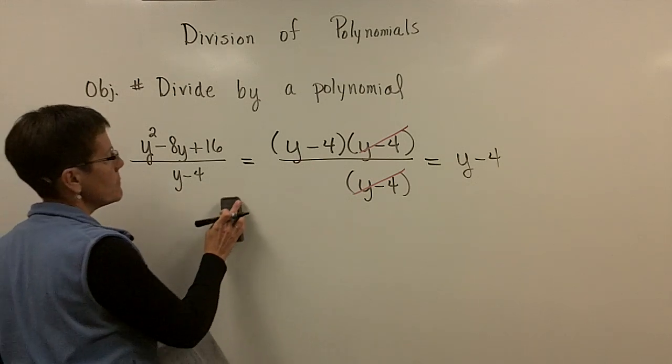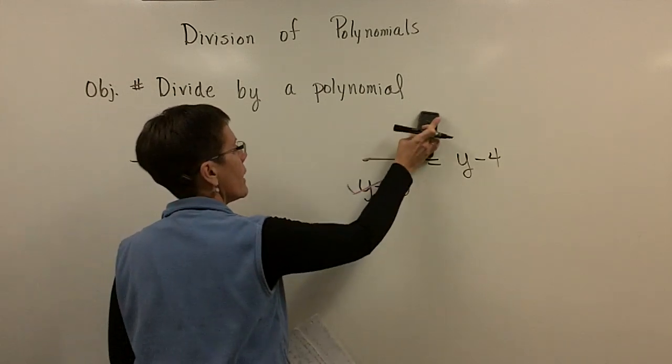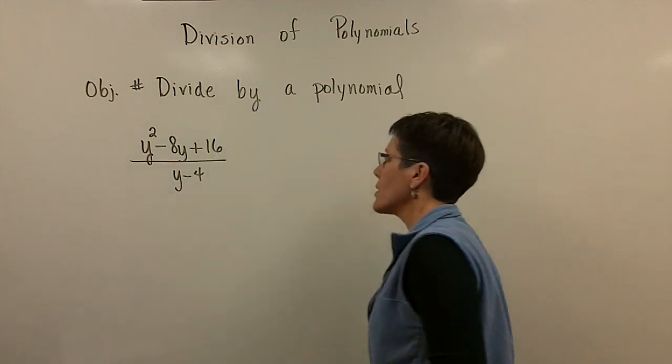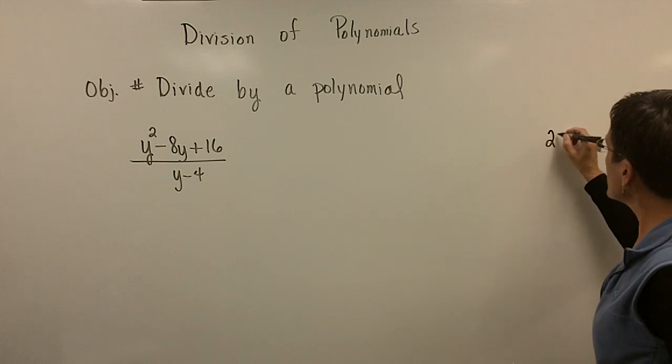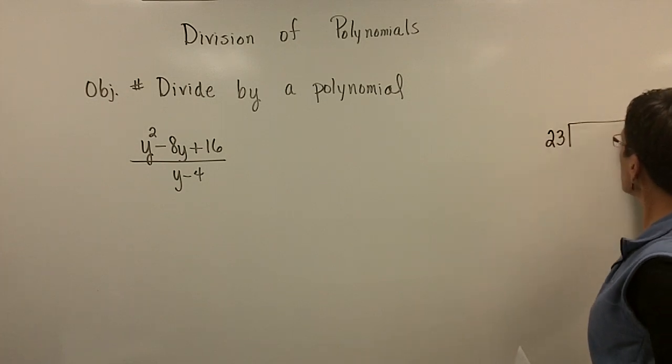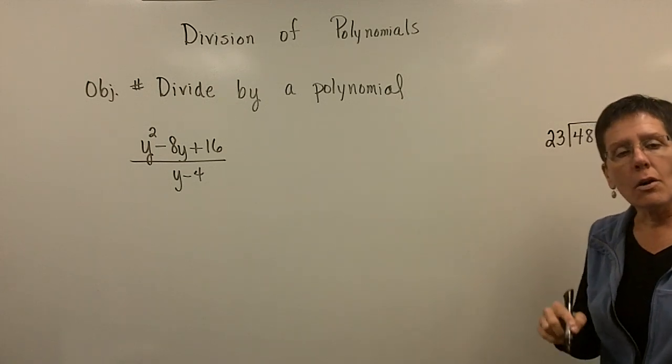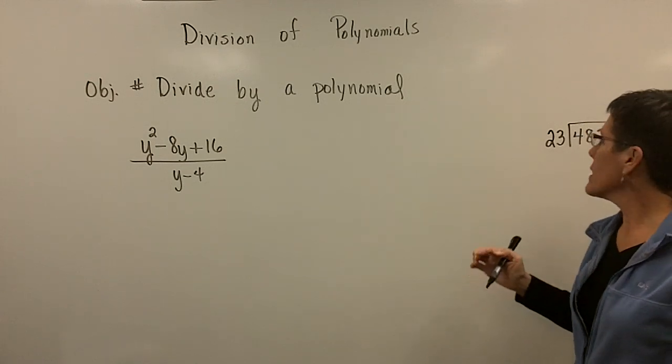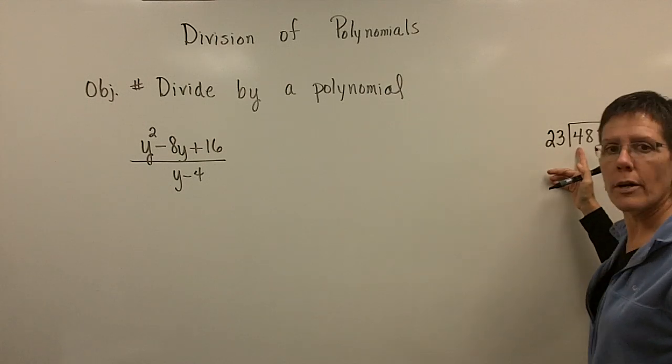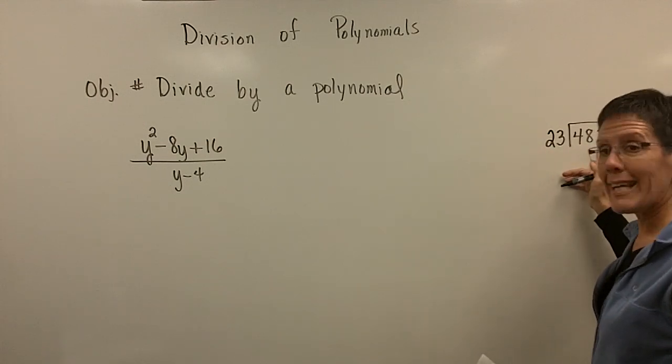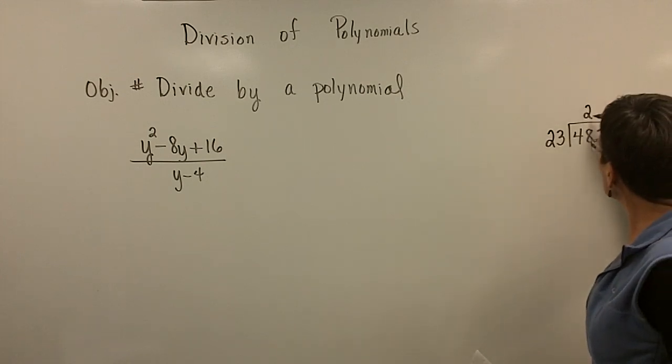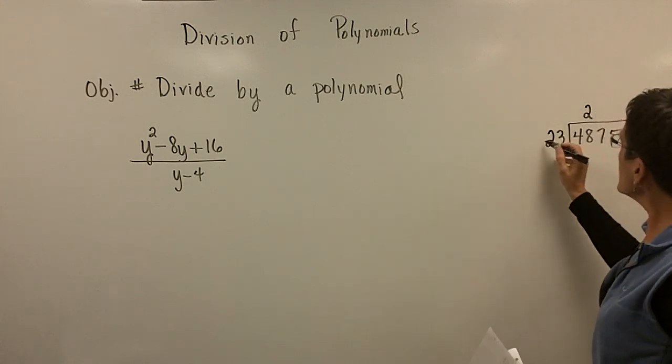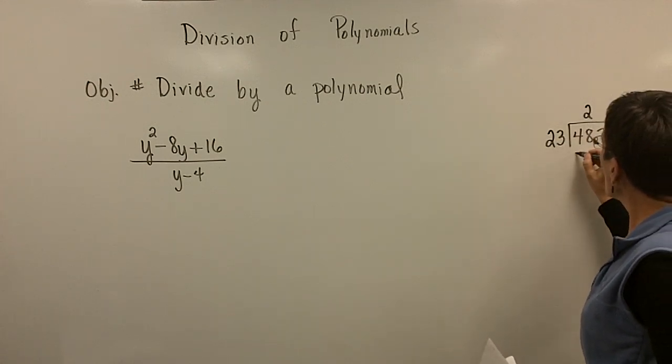So here's my original problem. And then I want to compare that to a long division problem from when you were younger. Let's just take the number 23 and divide it into 4,875. So what you said to yourself when you were younger is, did 23 go into 4? No. But does 23 go into 48? Yeah. It goes in about 2 times. And we would put that 2 right above that 8.